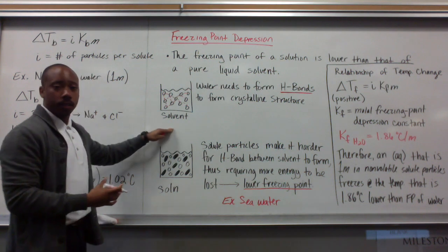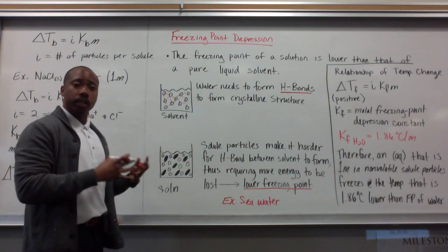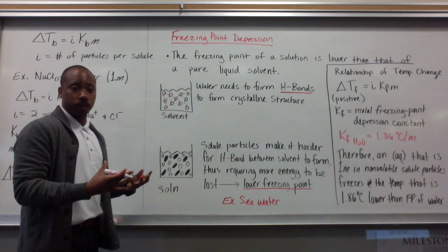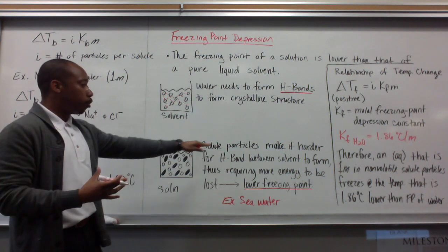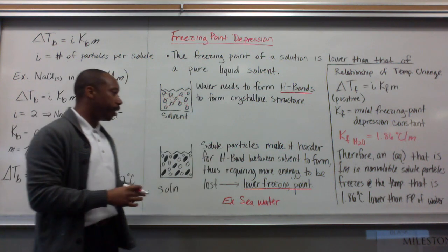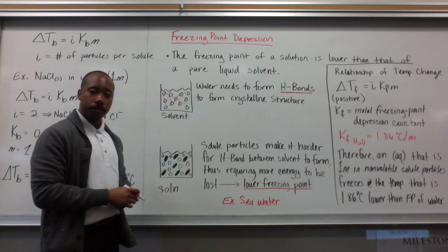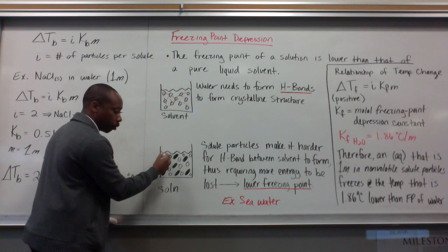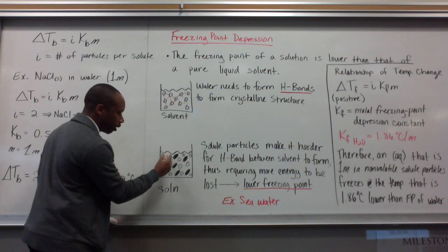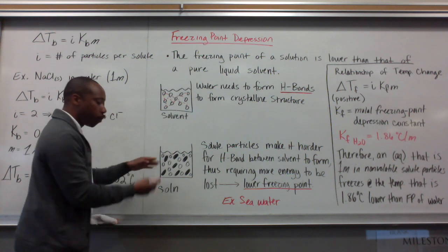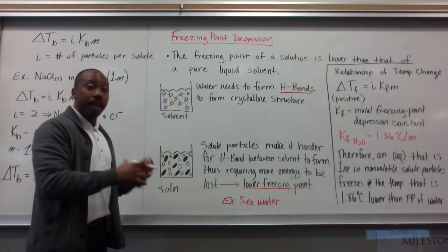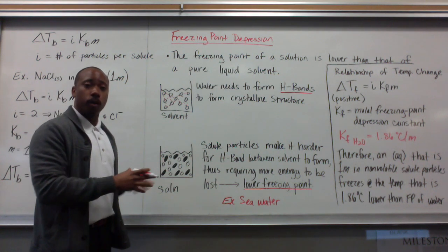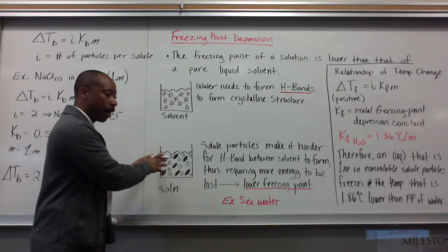Now, if we add in a solute, solute particles are usually larger than our water molecules. So, these solute particles make it harder for the hydrogen bonds between solvent to form. It's hard for these solvent particles, these white particles here, to connect to one another because the solute particles are in the way, and they're creating different intermolecular forces within this sample.